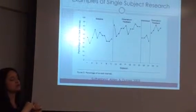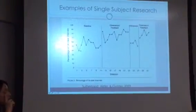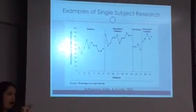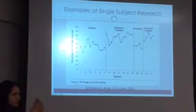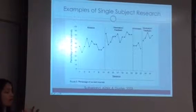And basically what you can look at the graph here is that in terms of the percentage of on-task intervals, so how often the students were on-task, it started out lower. With the faster rate of instruction, it went up.